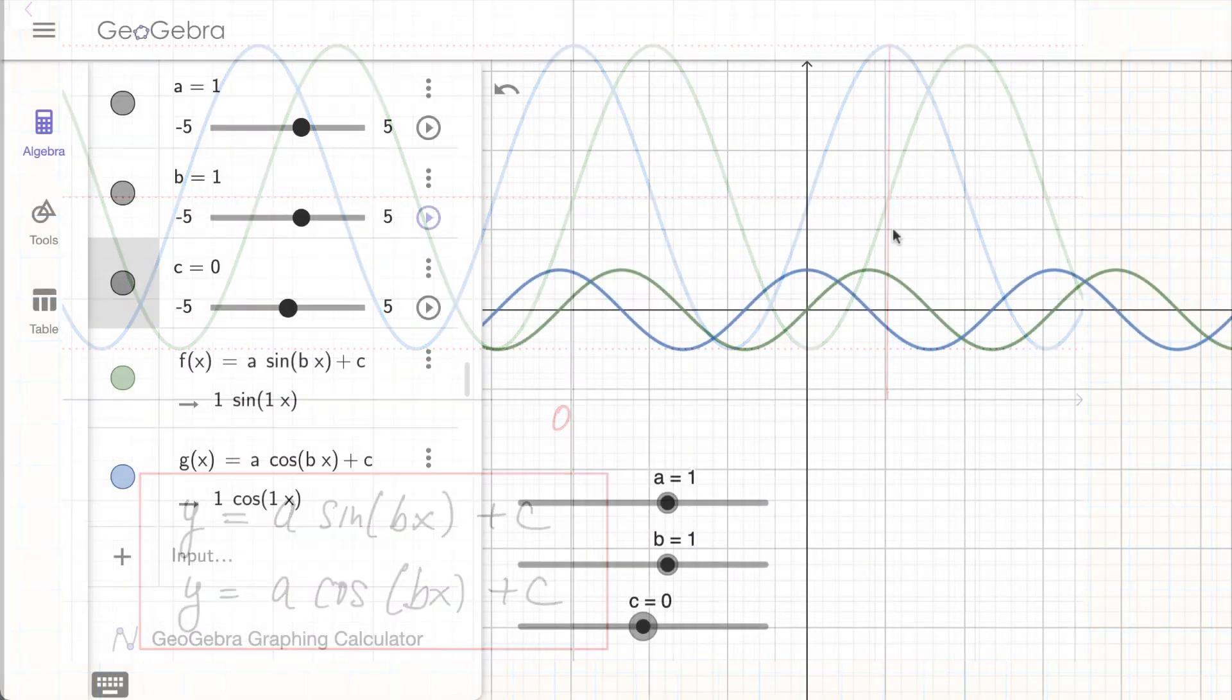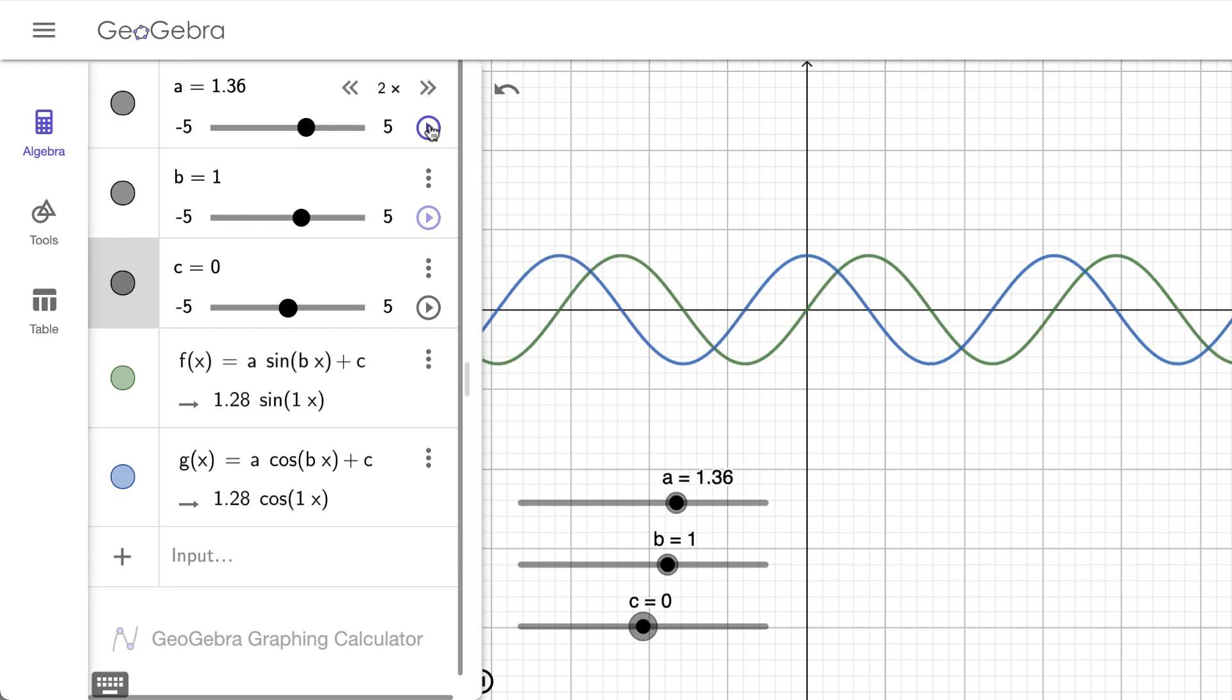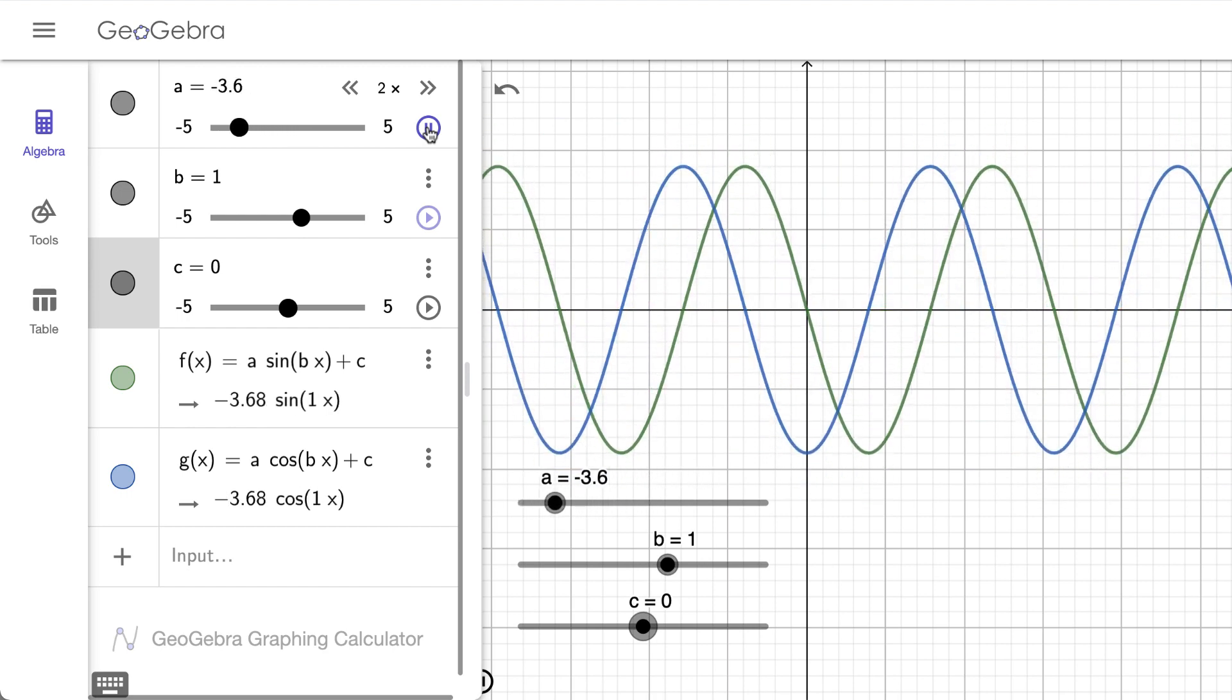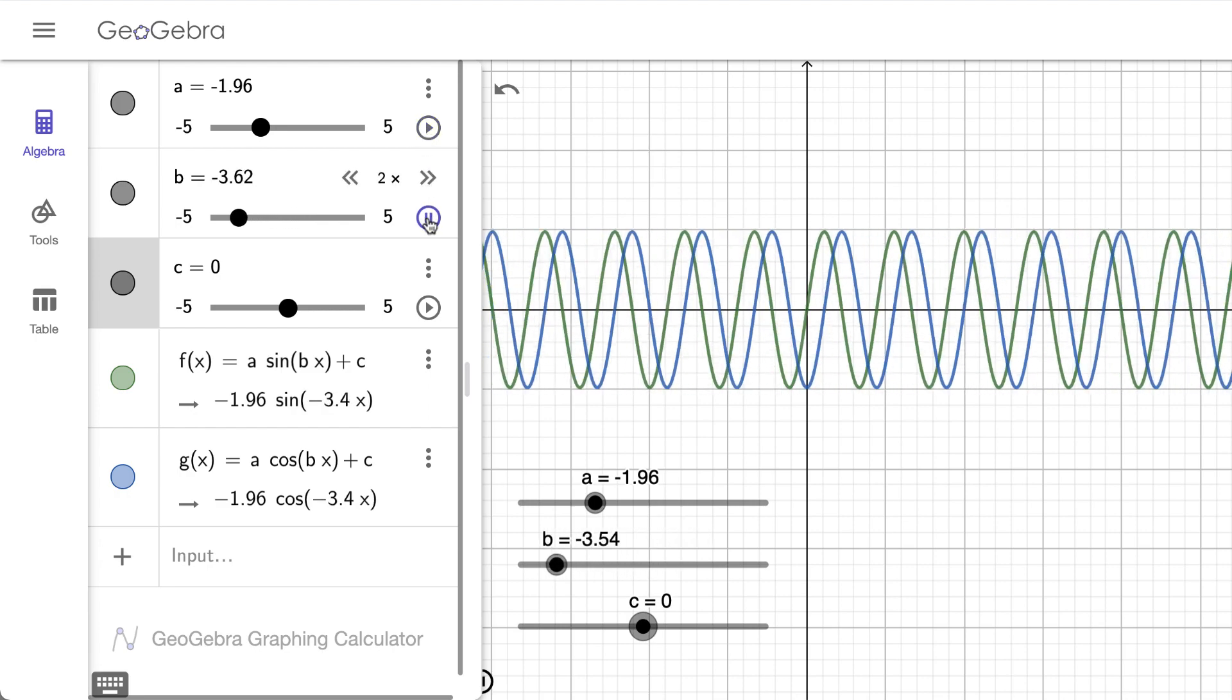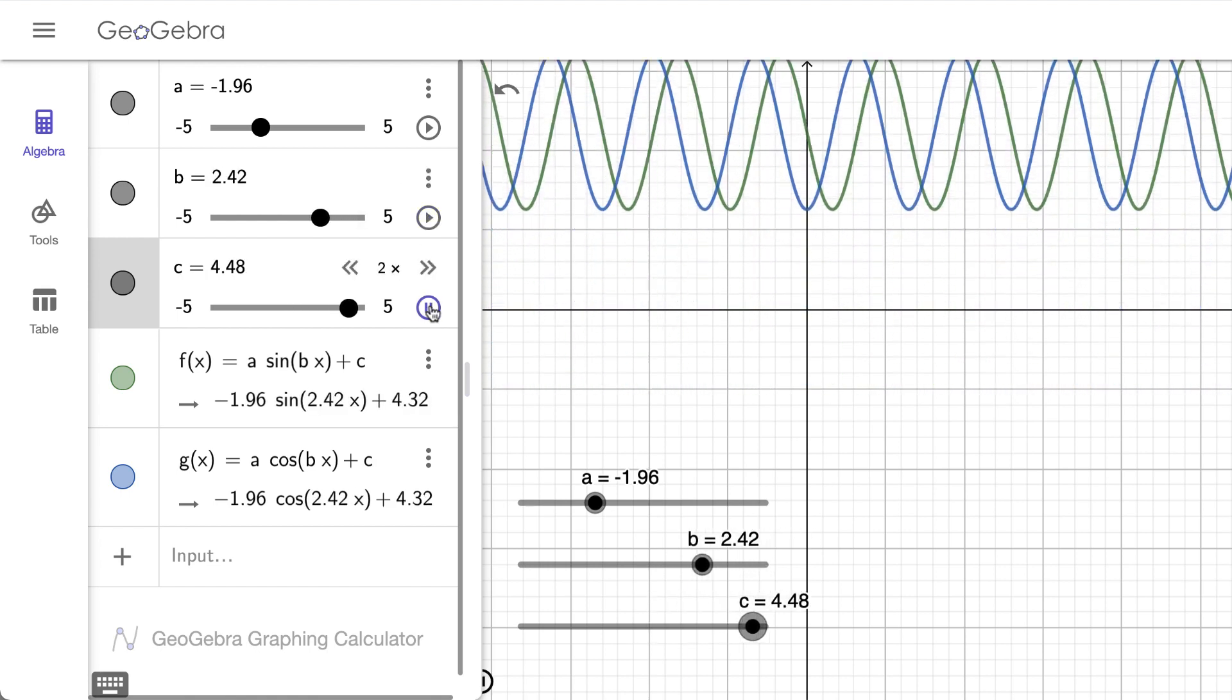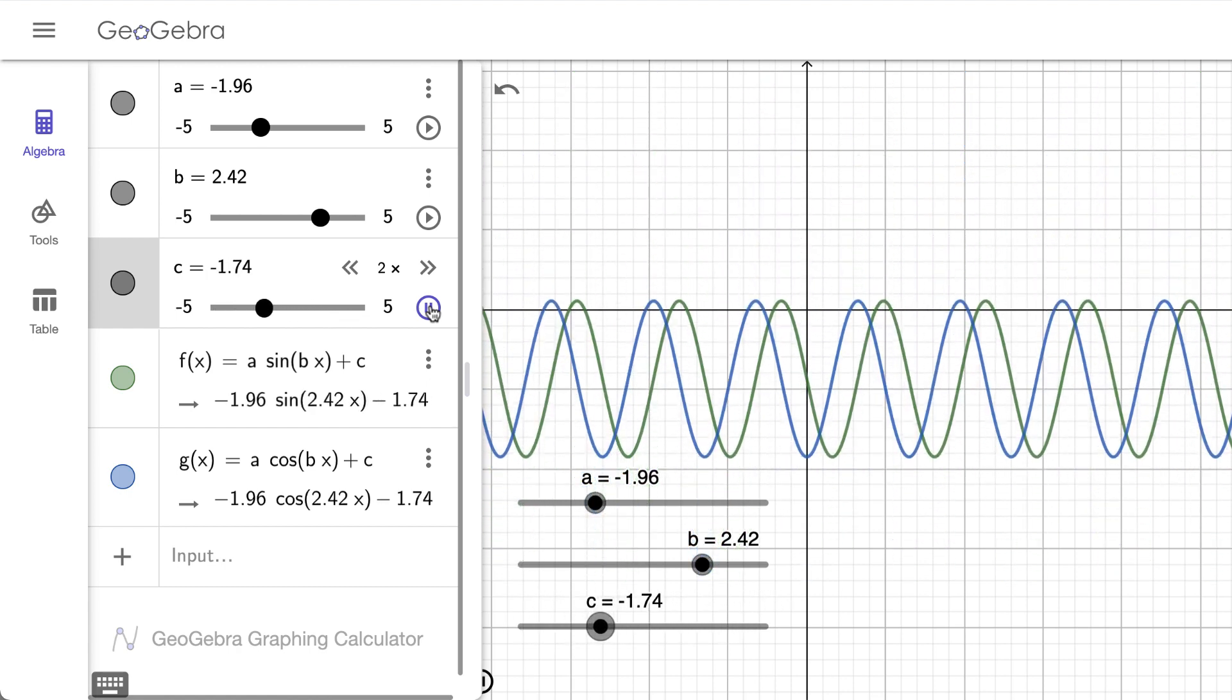Now if we look at this family of functions on Geogebra, we can see that as we vary the first parameter a, it corresponds to stretching these functions in the vertical direction. If a becomes negative, it can also flip these functions upside down. Changing the second parameter b corresponds to stretching these functions in the horizontal direction, and then finally adding this constant c at the end just shifts these functions up or down depending on the sign of this constant c.